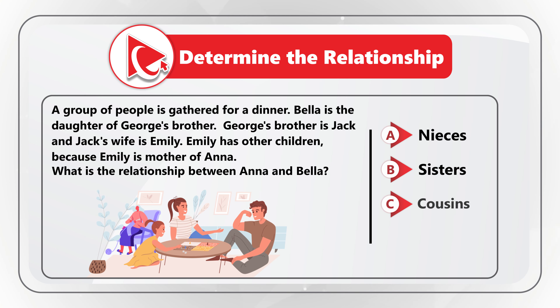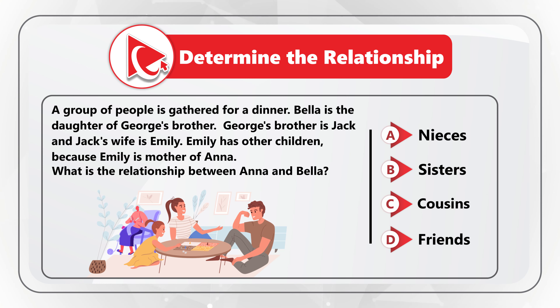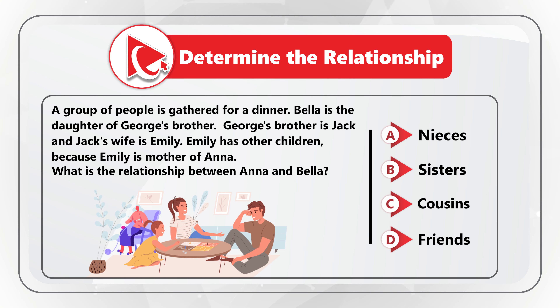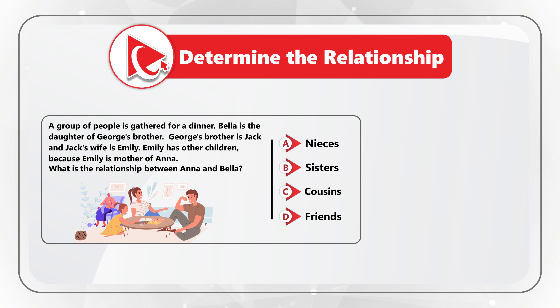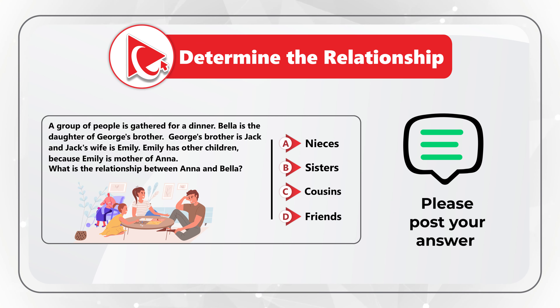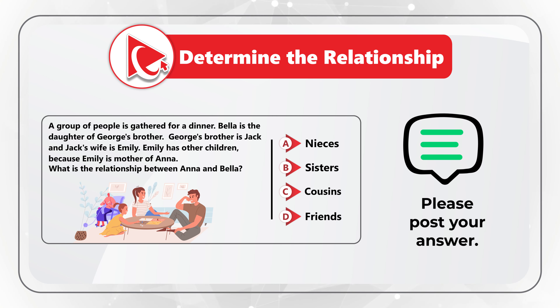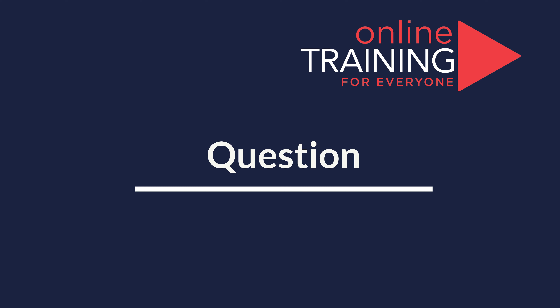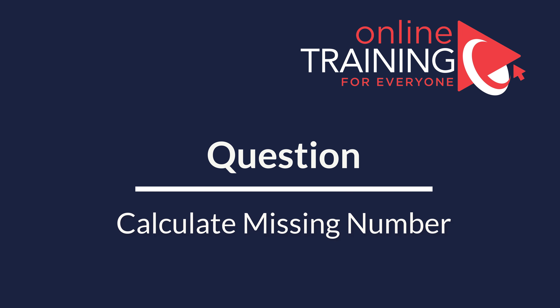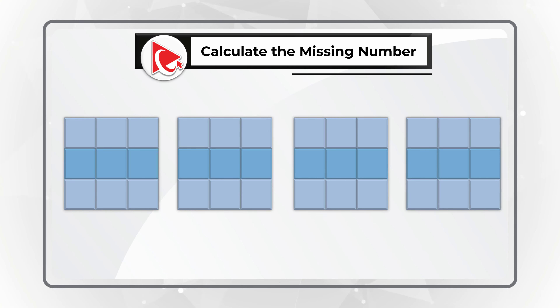Here's a question to practice your skills — determine the relationship between Anna and Bella. A group is gathered for dinner. Bella is the daughter of George's brother. George's brother is Jack, and Jack's wife is Emily. Emily is the mother of Anna. So what is the relationship between Anna and Bella? Choice A: they are nieces.